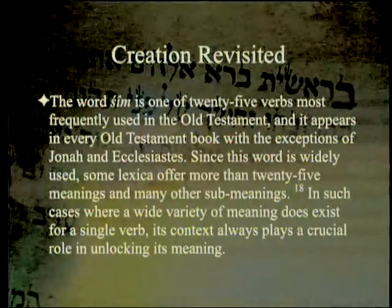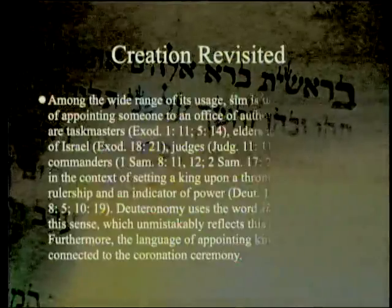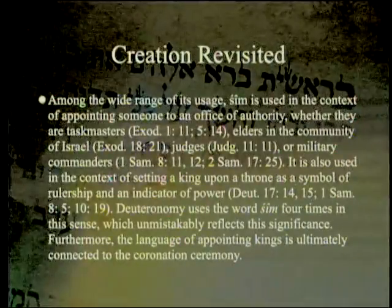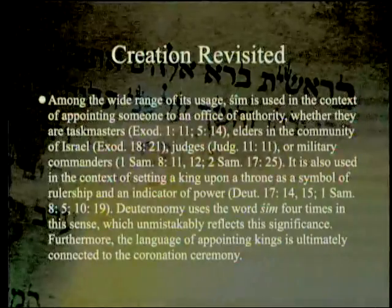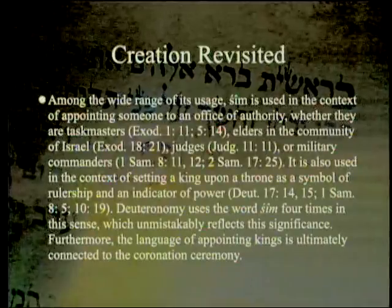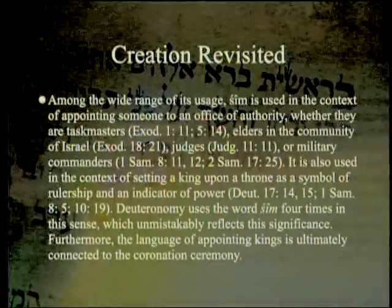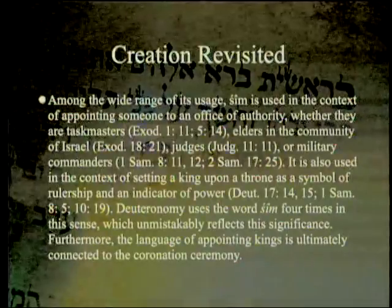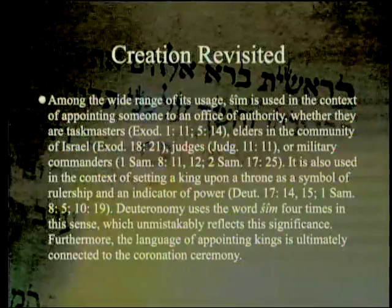Among the wide range of usage, 'sim' is used in the context of appointing someone to an office of authority — putting in place taskmasters, elders in the community, judges, or military commanders. It is also used in the context of setting a king upon a throne, putting a king as a symbol of rulership and an indication of power. Deuteronomy uses 'sim' four times in this sense, reflecting the significance that God puts or appoints kings.